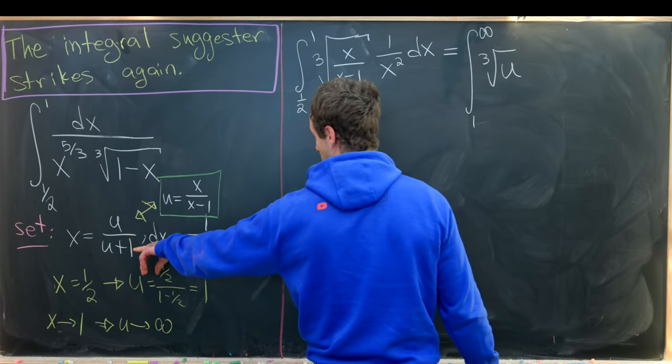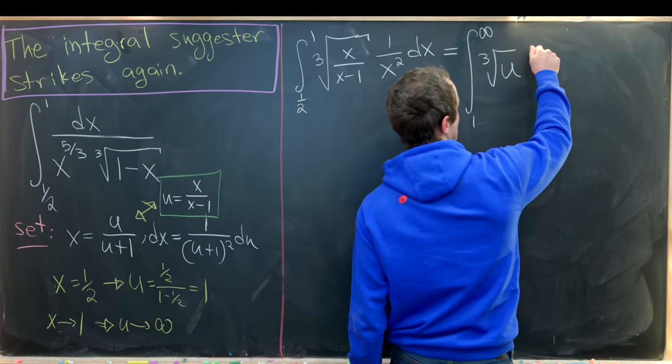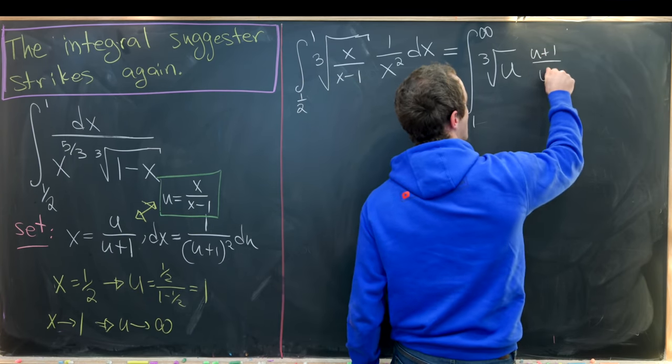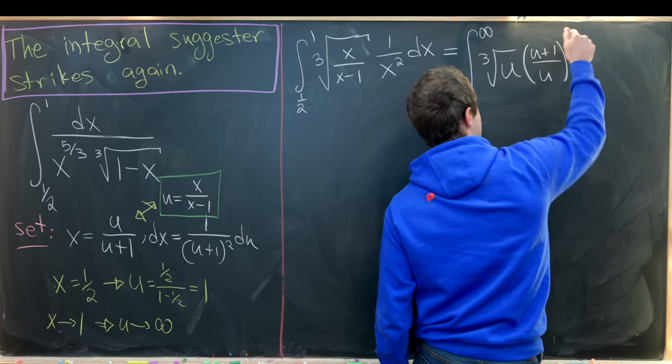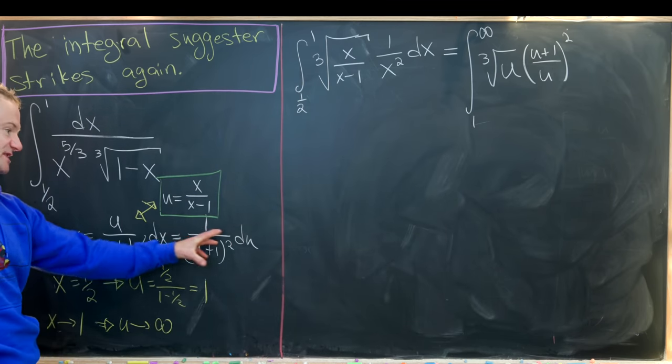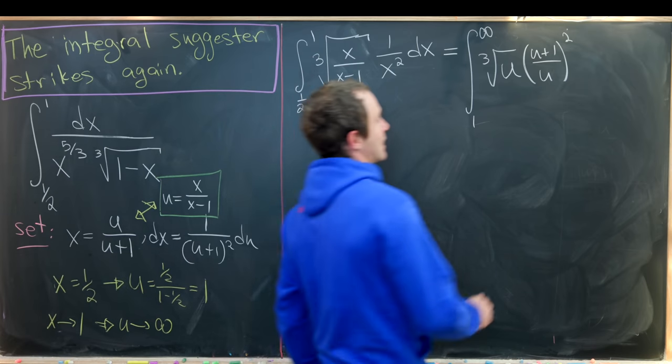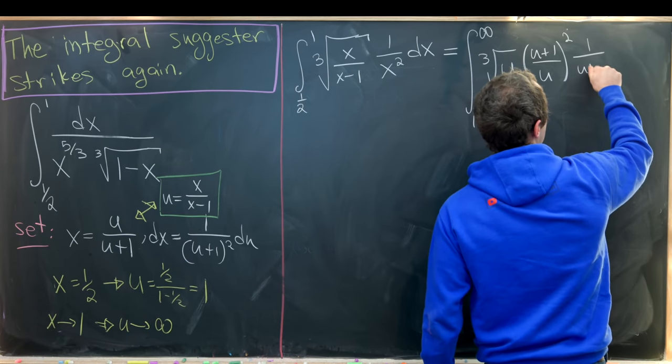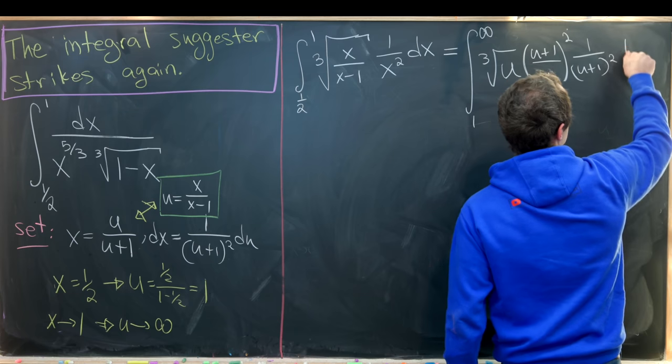And then we'll have 1 over x squared. So we'll use this equation for that. So 1 over x squared means that we can just invert this and square it. So that'll be u plus 1 over u quantity squared. And then we'll have dx, which is this guy right here. So that'll be 1 over u plus 1 squared du.